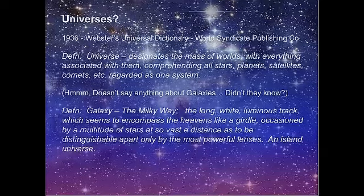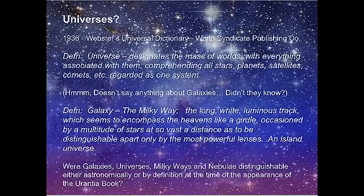Definition: Galaxy. The Milky Way. The long, white, luminous track which seems to encompass the heavens like a girdle, occasioned by a multitude of stars at so vast a distance as to be distinguishable apart only by the most powerful lenses - an island universe. So in 1936, when this dictionary was written, these definitions should be relatively current with the writing of the Urantia Book. The definitions do include the terms galaxy, universe, and Milky Way. But the question is: were these galaxies, universes, Milky Ways, and nebulae distinguishable - either astronomically or by definition - at the time of the appearance of the Urantia Book? That's part of what we have to cover.